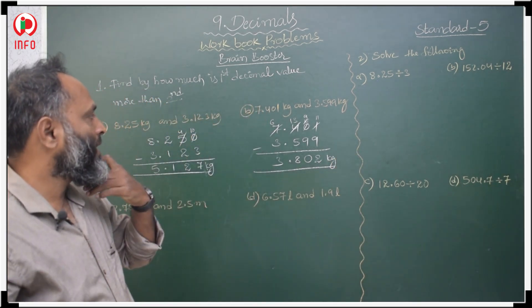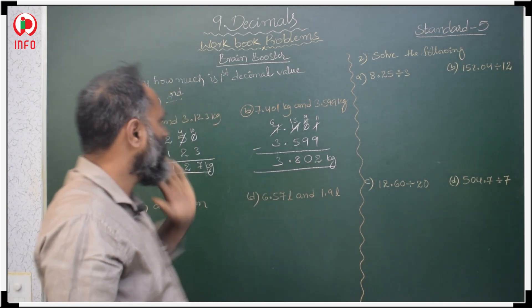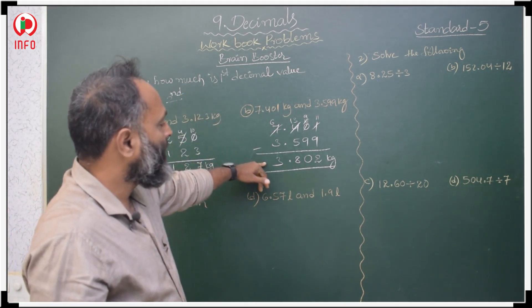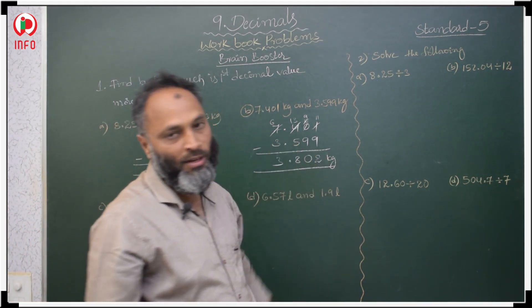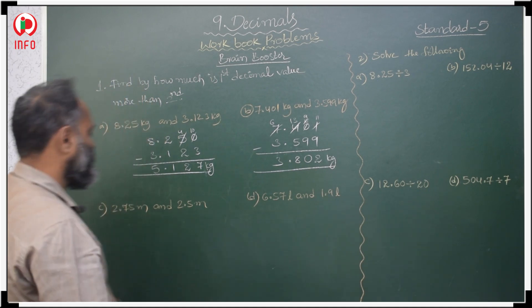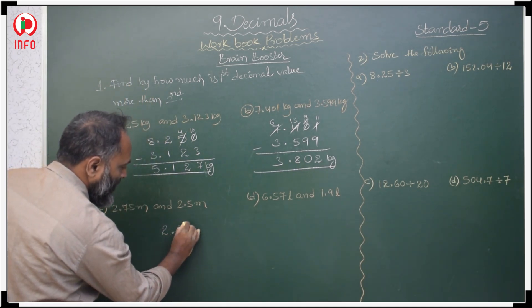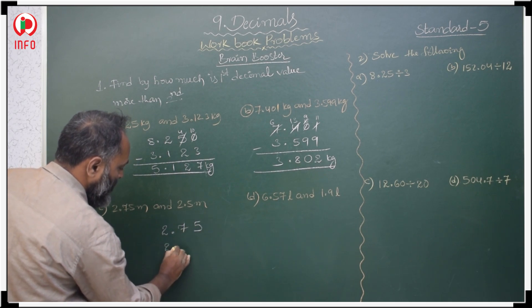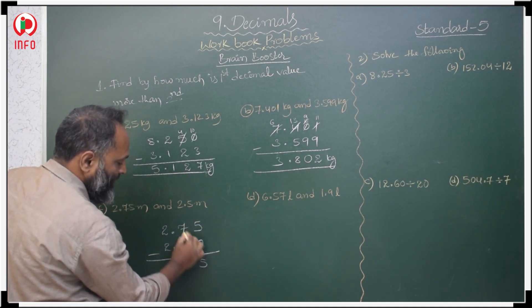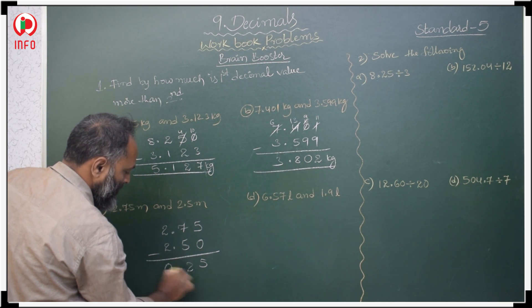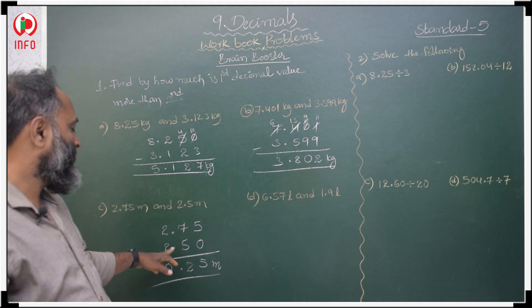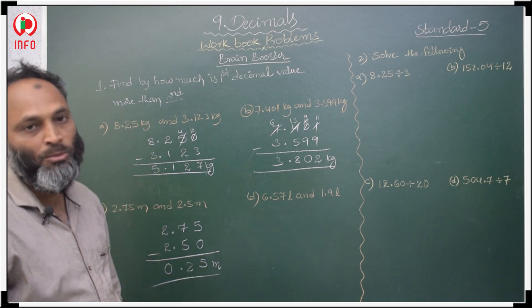The second one is 3.802 kg less than the first. Next: 2.75 meters minus 2.5. There is no hundredths place so write 0. 5 minus 0 is 5; 7 minus 5 is 2; 2 minus 2 is 0. The first is 0.25 meters more than the second. Then 6.57 liters minus 1.9. There is no hundredths place so write 0. 7 minus 0 is 7. Borrow: 15 minus 9 is 6; 5 minus 1 is 4. The answer is 4.67 liters more.